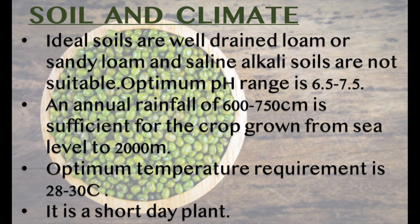Soil and climate: Ideal soils are well-drained loam or sandy loam. Saline and alkali soils are not suitable. The pH range is 6.5–7.5. An annual rainfall of 600–750 mm is sufficient for the crop. It is grown from mean sea level up to 2,000 meters. The optimum temperature requirement is 28–30°C. It is a short-day plant.